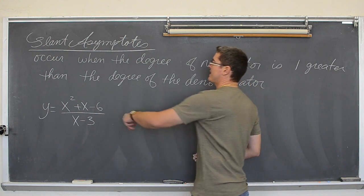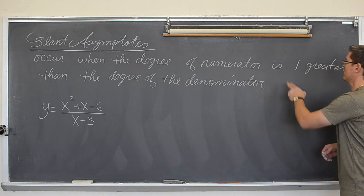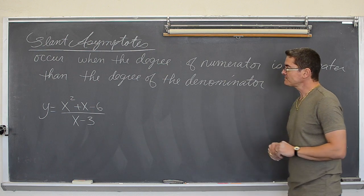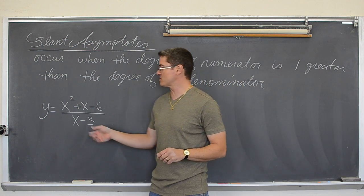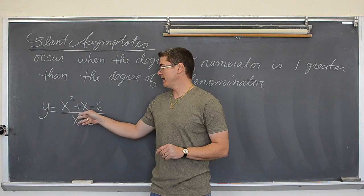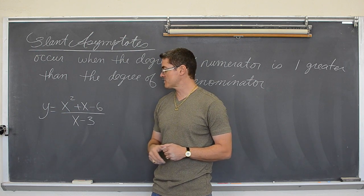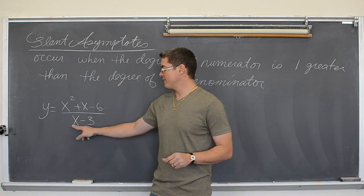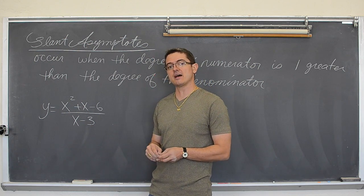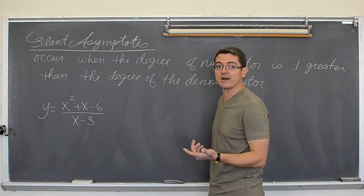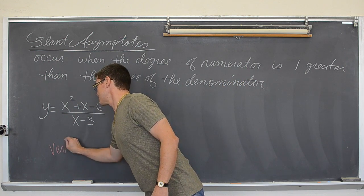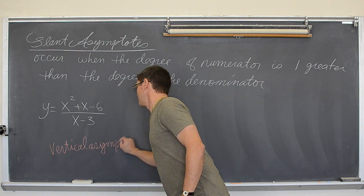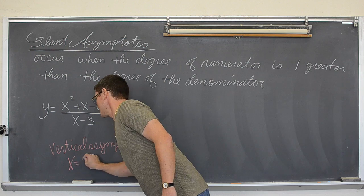However, with slant asymptotes they occur when the degree of the numerator is one greater than the degree of the denominator. So in this case we have a rational equation where the degree on top is two and the degree on the bottom is one. So this graph is going to have two asymptotes. A vertical asymptote at x equals three because you cannot divide by zero. So there is a vertical asymptote at x equals three.